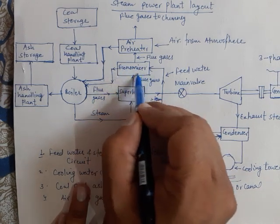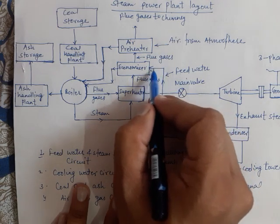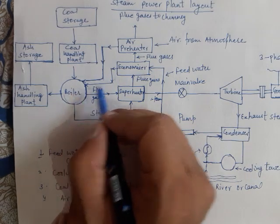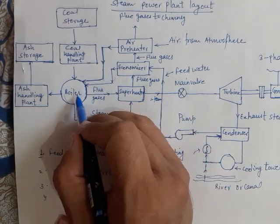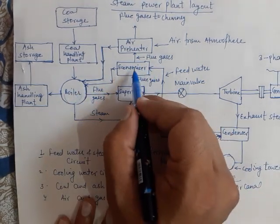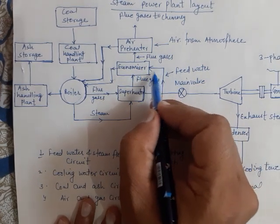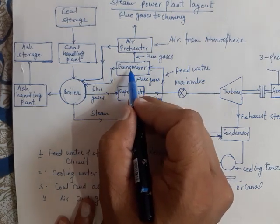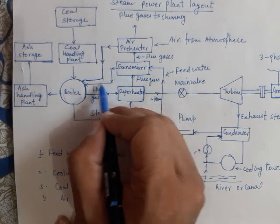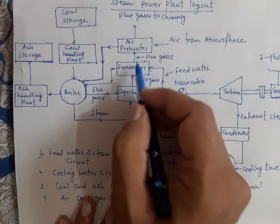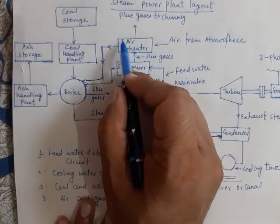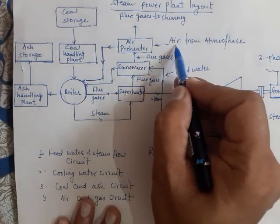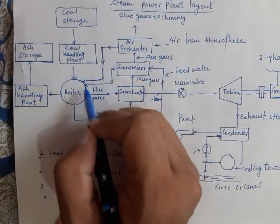After the superheater, the flue gases flow through the economizer, where their waste heat is utilized by the feed water. The economizer acts as a water preheater — the feed water is preheated inside the economizer using the waste heat of the flue gases, and then sent to the boiler. After that, the flue gases flow through the air preheater, where the incoming air is preheated.